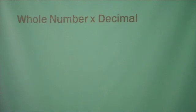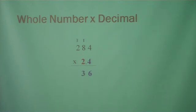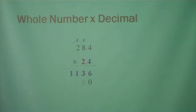Now we're going to multiply a whole number times a decimal: 284 times 2.4. Notice we lined up the numbers — don't worry about the decimal, line up the numbers and multiply like normal. Start with 4: 4 times 4 is 16, put down your 6, carry your 1. 4 times 8 is 32 plus 1 is 33, put down your 3, carry your 3. 4 times 2 is 8 plus 3 is 11. Sweep your carries. Put down your place marker because now we multiply by the 10 spot. 2 times 4 is 8. 2 times 8 is 16 — put down your 6 and carry your 1. 2 times 2 is 4 plus 1 is 5. Add them up.